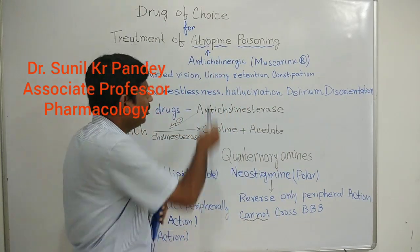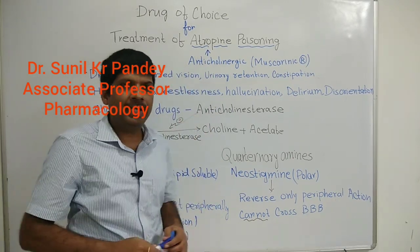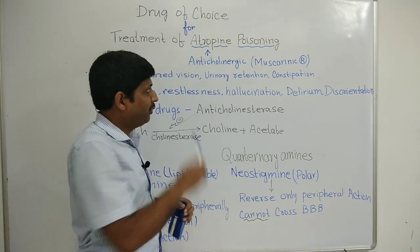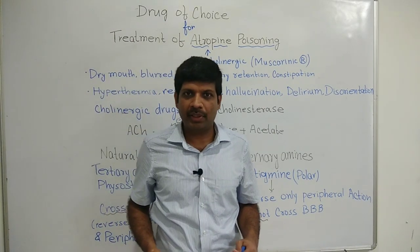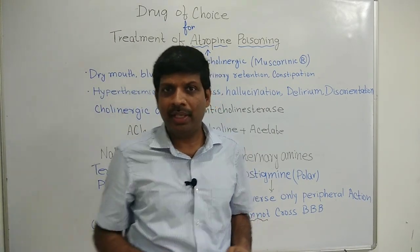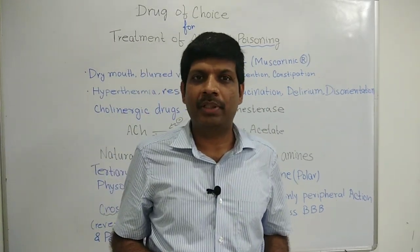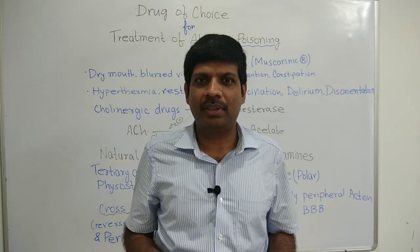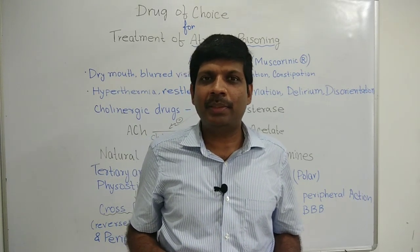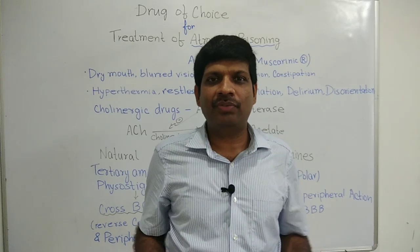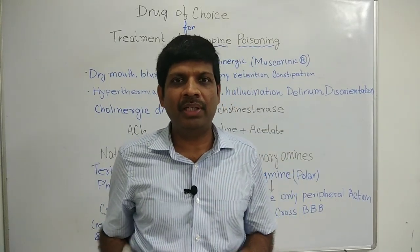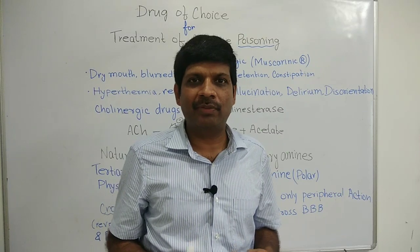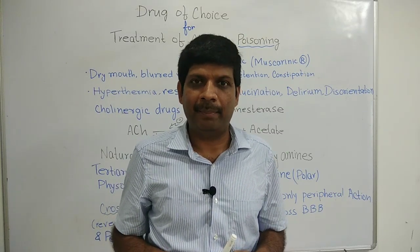Atropine is an anticholinergic drug, which means it will block the cholinergic receptors. Now, there are two types of cholinergic receptors: the muscarinic receptor and the nicotinic receptor. The muscarinic receptors are further classified into M1, M2, M3, M4, and M5, whereas the nicotinic receptor is classified into NN and NM.